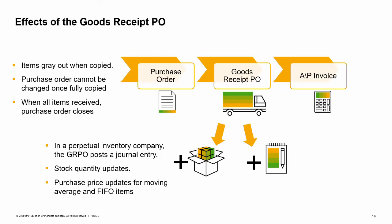Once the goods receipt PO is added to the system it has the following consequences. Items that have been partially or completely delivered appear in light gray in the purchase order document. The purchase order based document cannot be changed once the document has been fully copied. When all items are received, the purchase order status changes to closed. If you are running perpetual inventory, the goods receipt PO creates a journal entry to increase inventory value. The system updates the stock quantity and inventory, and the unit cost gets updated based on the purchase price used in the document for items controlled by moving average or FIFO valuation methods.